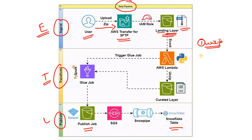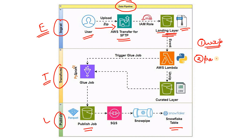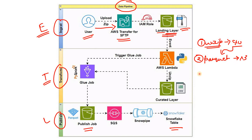Parquet is a columnar data format where query execution is faster and it applies several compression techniques so big data can be stored in a smaller area. We convert the CSV data to Parquet and write it to another S3 location. As the last step, we load the data into our Snowflake cloud data warehouse platform.